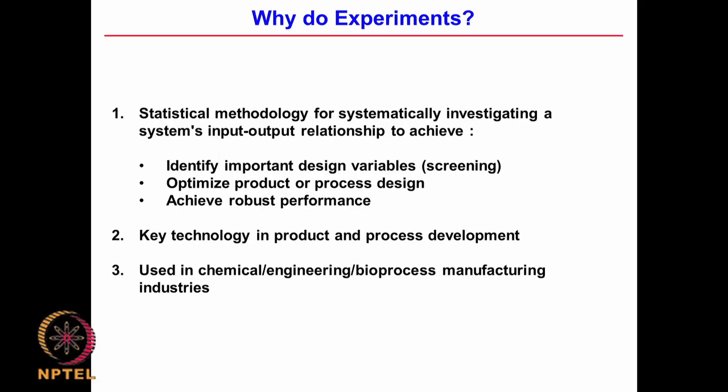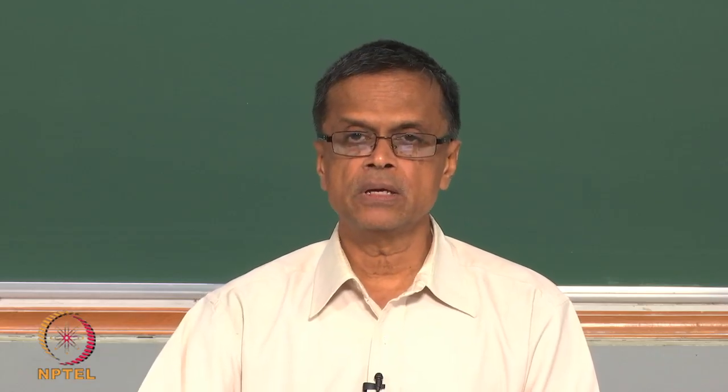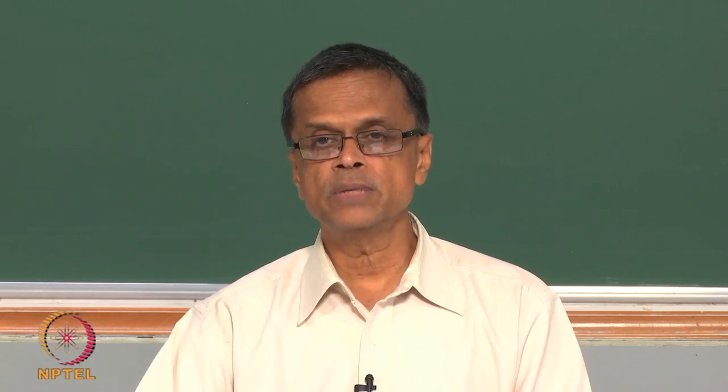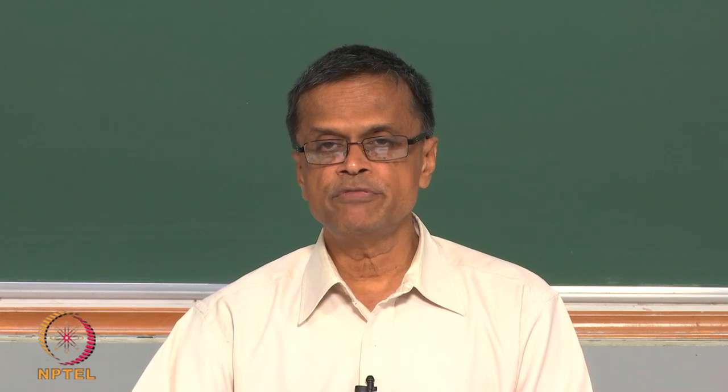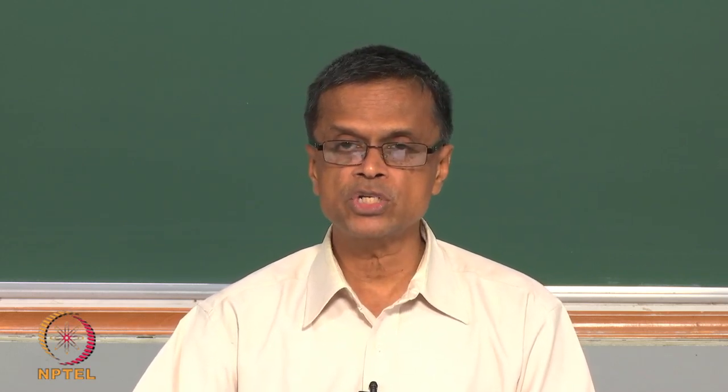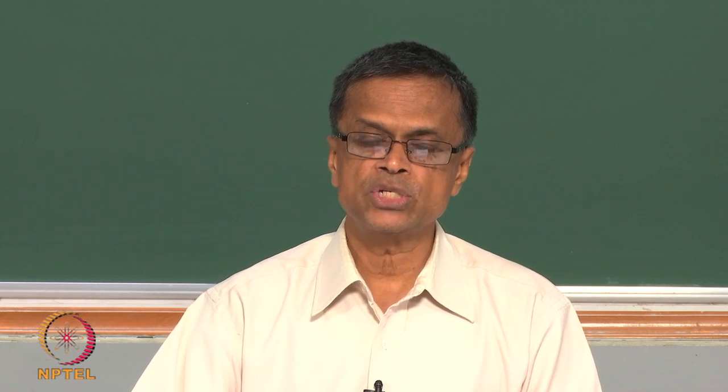We also want to achieve robust performance — we want the bioreactor to be robust so it does not go out of control for small changes in inputs. If the temperature changes by 1 degree, we do not want a very large change in product amount and quality. That is called a robust process design — how the process absorbs small changes in inputs. For example, raw materials can have different amounts of impurities; if even for small variations in raw material the product concentration or yield changes a lot, it is not robust. Whereas if it can absorb the impurity and still give the desired product amount and concentration, that is called a robust design.